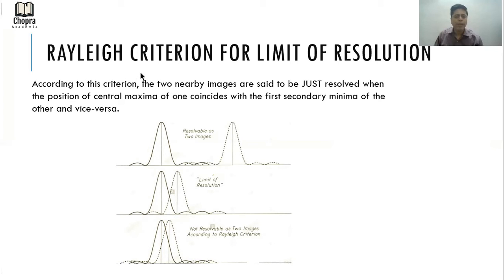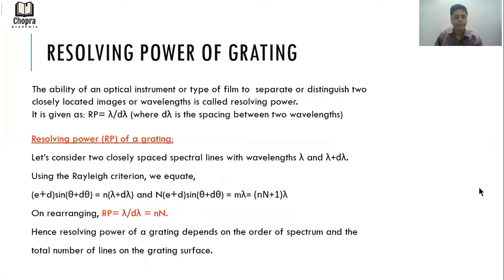Now, resolving power of a grating. What is the resolving power? The ability of an optical instrument or type of film to separate or distinguish two closely located images or wavelengths is called resolving power. In general, the formula for resolving power is given as λ by Dλ, where Dλ is the spacing between two wavelengths.